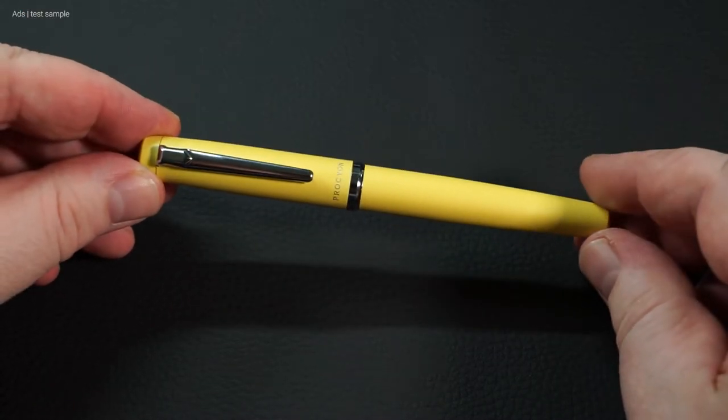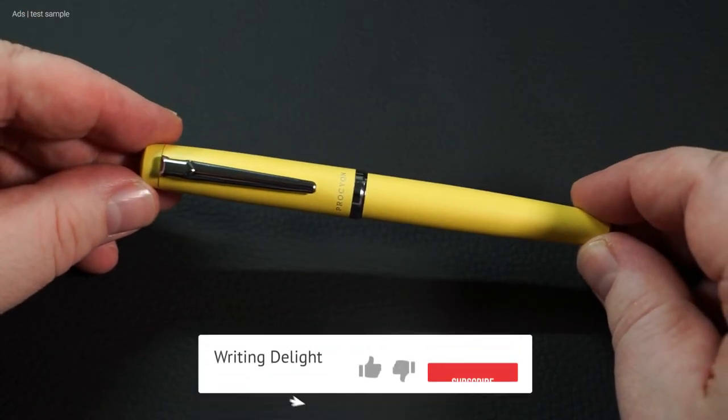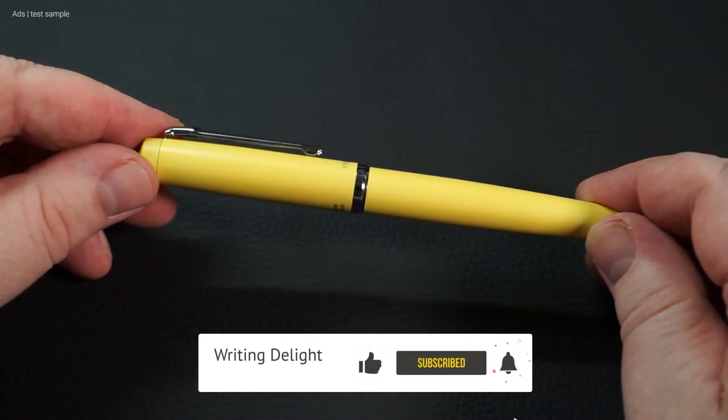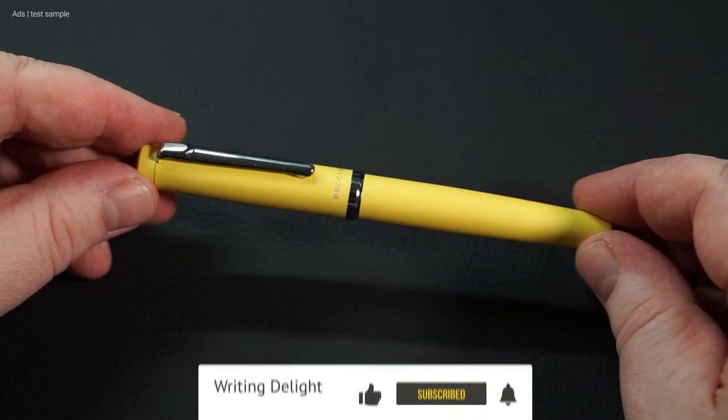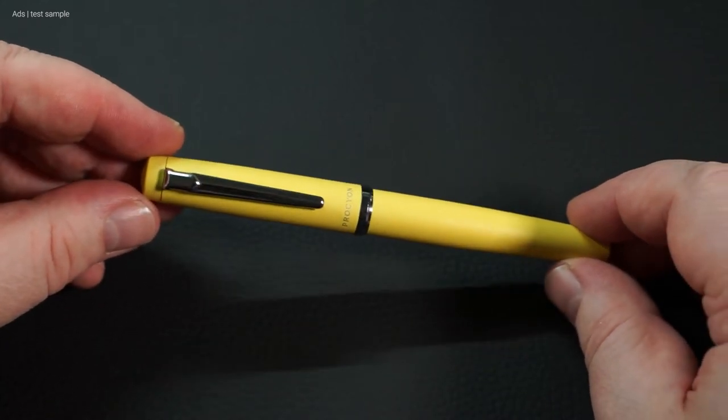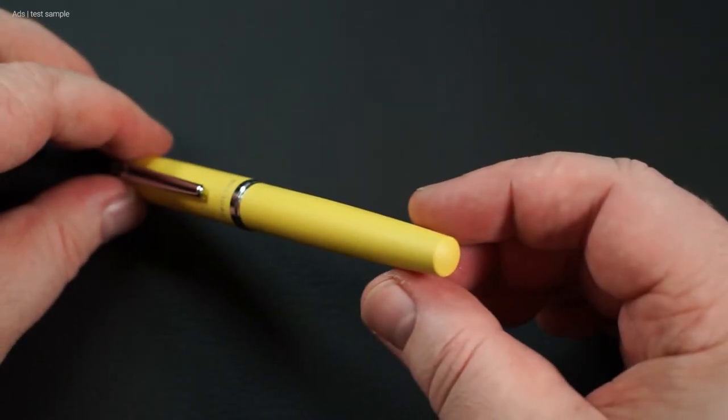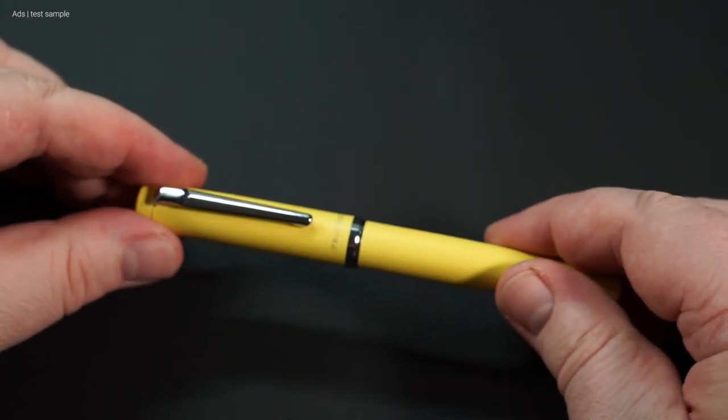The Procyon comes in 5 different color versions. One of them is this citron yellow version. The fountain pen has a pretty simple shape with a flattened finial and barrel end. A simple clip and the cap in silver loosen up the look.